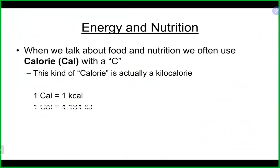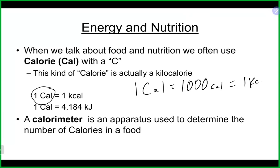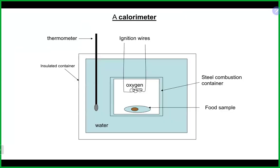Let's finish up the rest of this chapter. We talked about energy and nutrition — there are nutritional calories, represented by capital C. That capital C nutritional calorie is 1,000 of the small calories, which is one kilocalorie. A calorimeter — sometimes called a bomb calorimeter — is an apparatus used to determine the number of calories in food. It's an isolated system with water, oxygen, ignition wires, and you basically set the food on fire.